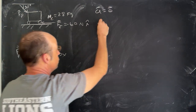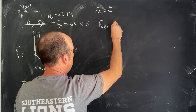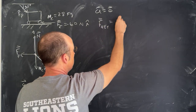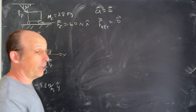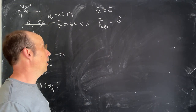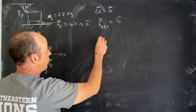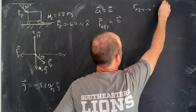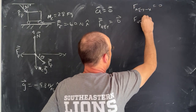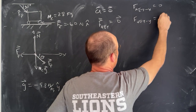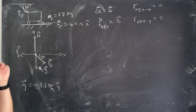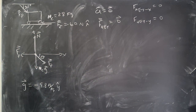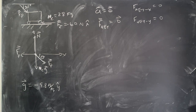We have the free body diagram and the condition that f-net total equals zero. I can write that as two scalar equations: f-net-x equals zero, and f-net-y equals zero. It turns out we only need one of those, but I'll write them both down. Let's write down the x equation, the y equation, and then solve for what we don't know.